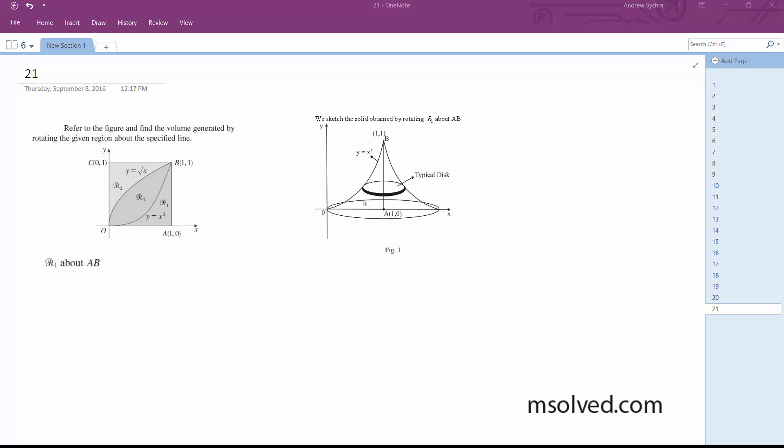Alright, we want to rotate this about a,b, and what that means, a,b in this case, is this line here.